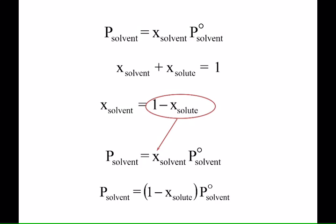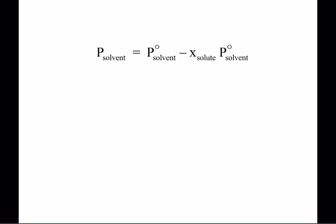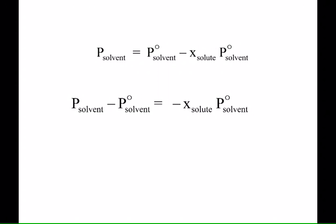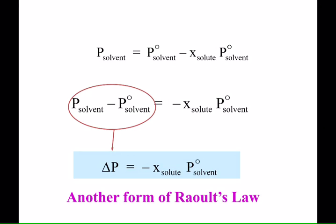The equilibrium vapor pressure of the solvent in the solution is equal to one minus the mole fraction of the solute, times the pure equilibrium vapor pressure of the solvent. If we distribute that through, delta P — the change in equilibrium vapor pressure — is always final minus initial, so it's P minus P-naught. This is just another form of Raoult's Law. Make sure you read your subscripts carefully.